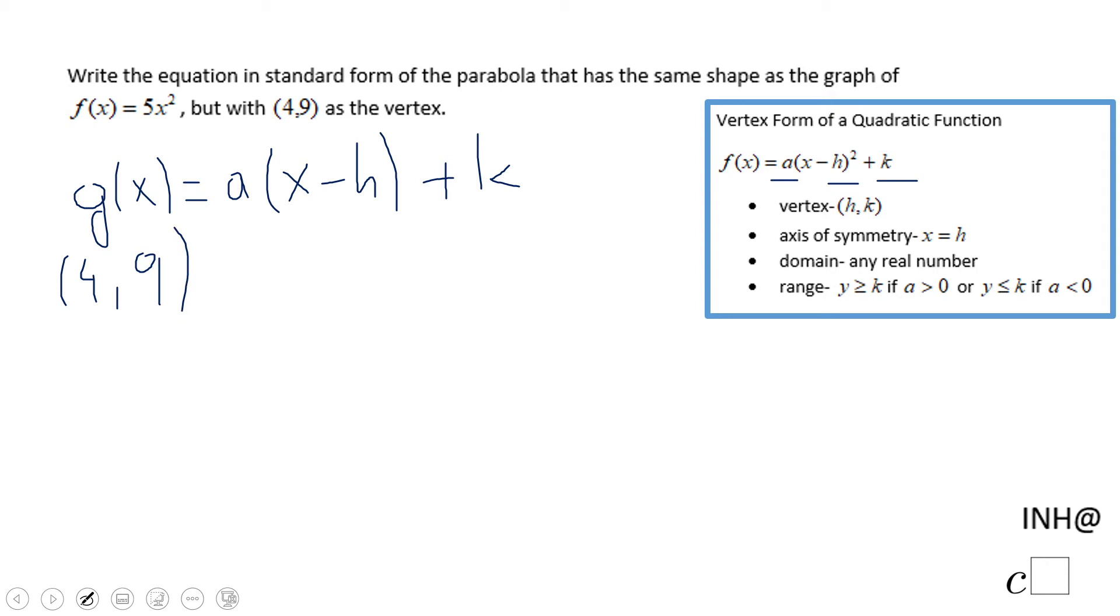Given that this function has the vertex (4,9), that means h is 4, k is 9. So we can write that g(x), but we still need a.